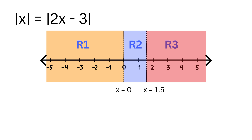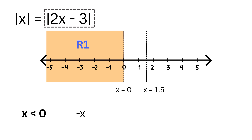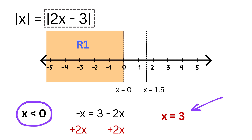We will treat each region separately. When x is less than zero, the absolute value of x becomes minus x because x is negative, and the absolute value of 2x minus 3 becomes minus the expression 2x minus 3 because in this region that expression is also negative. So the equation becomes minus x equals 3 minus 2x. Adding 2x to both sides gives x equals 3. But check the region condition: we assumed x is less than zero, while x equals 3 is not less than zero. So this candidate is invalid — region 1 produces no true solutions.